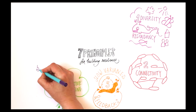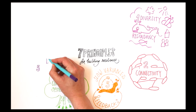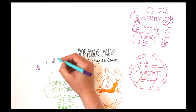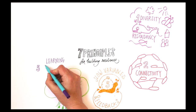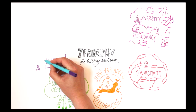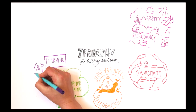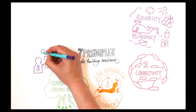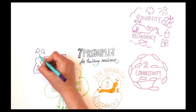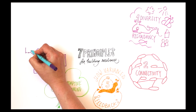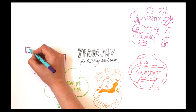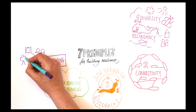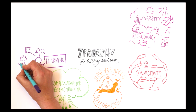Principle 5: Encourage learning. Social-ecological systems are always in development, so there is a constant need to revise existing knowledge and stimulate learning. More collaborative processes can also help.